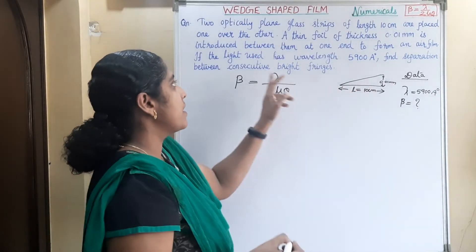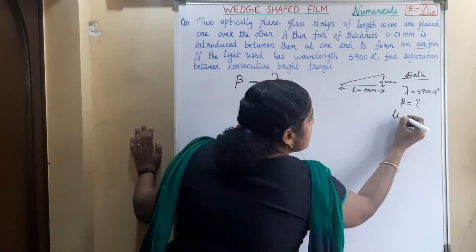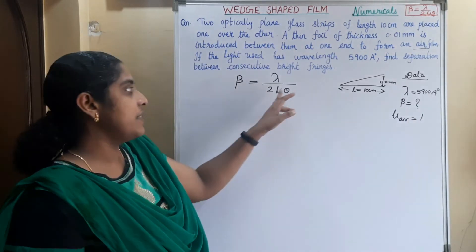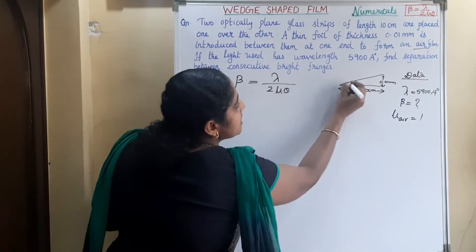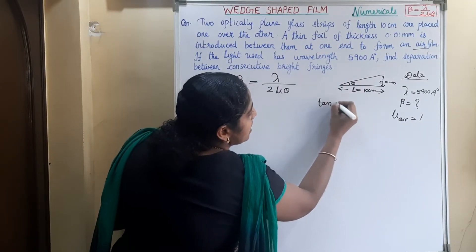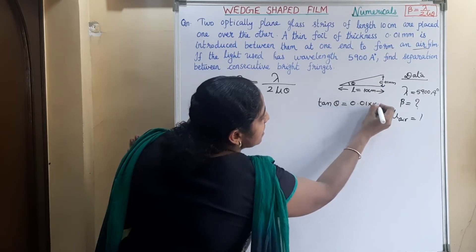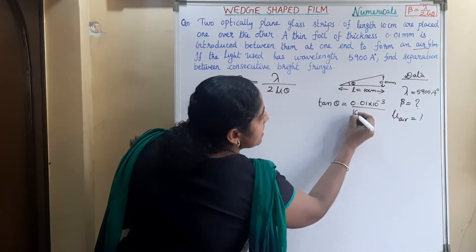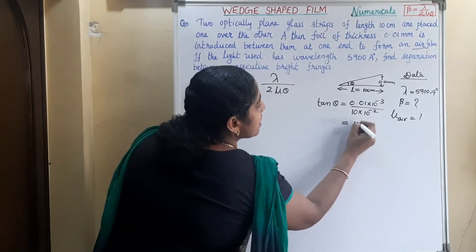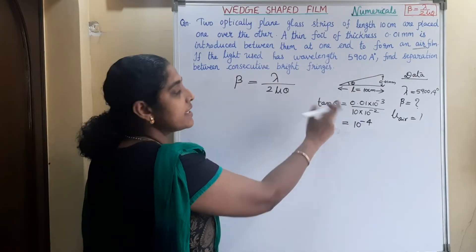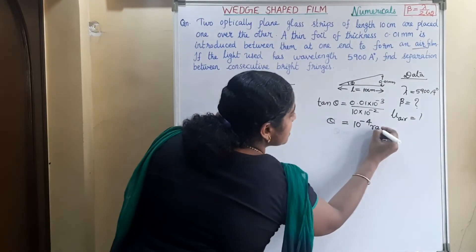Lambda is given. The wedge formed is of air, so the refractive index mu is equal to 1. The only unknown value is angle of wedge theta. We can find out the angle of wedge theta by taking the ratio using tan. That is, tan theta is equal to 0.01 mm, that is 10 raise to minus 3, divided by length 10 centimeter, that is 10 into 10 raise to minus 2. That is equal to 10 raise to minus 4. If theta is very small, tan theta we can consider as theta, so theta is equal to 10 raise to minus 4 radian.